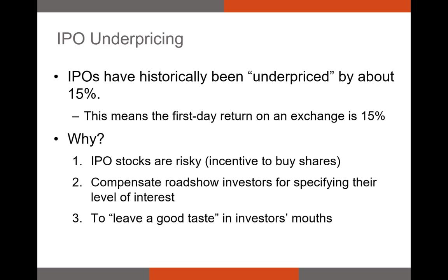Another explanation is that underpricing the issuance leaves a good taste in investors' mouths. The argument is that the firm might need to issue an SEO, or secondary equity offering, which occurs when the firm issues more shares of stock to raise more cash. If the firm left a good taste in investors' mouths during the IPO — meaning investors earned a large return — then they should be more likely to buy shares of the SEO. There's less empirical evidence to support this theory though, since the firm might never issue an SEO or might issue new shares very far in the future. Overall, I think the risk story is the most likely explanation for IPO underpricing.